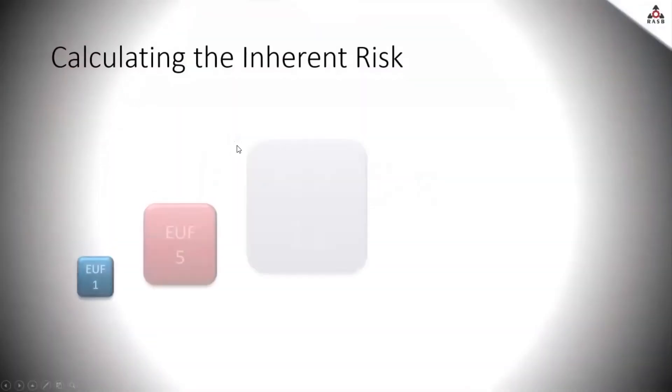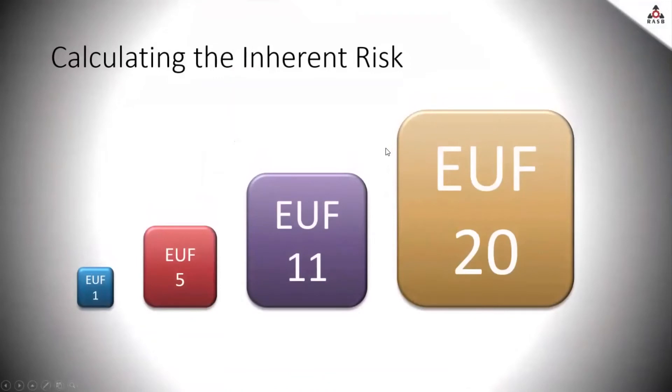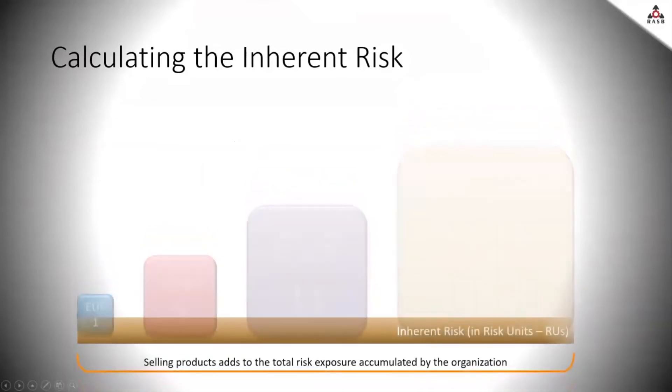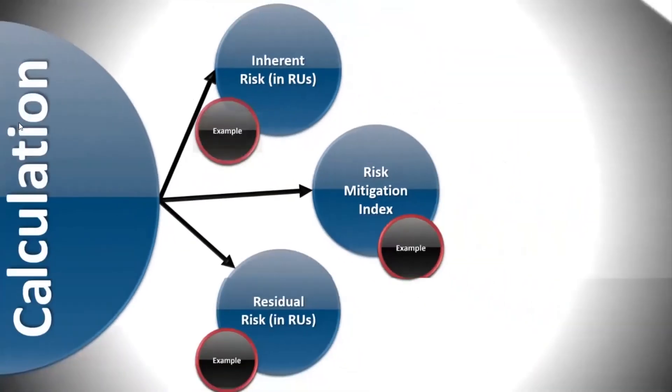Also, prepared a visualization to make it as easy as possible to understand. You remember the products and their EUF number which basically all flow through the fact that they are sold by the organization. They are flowing to this inherent risk metric.